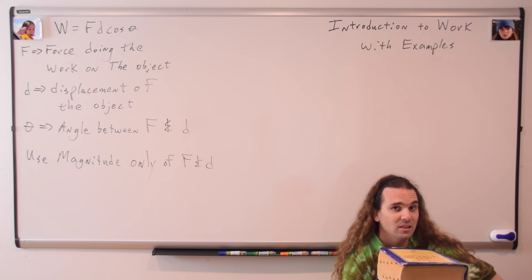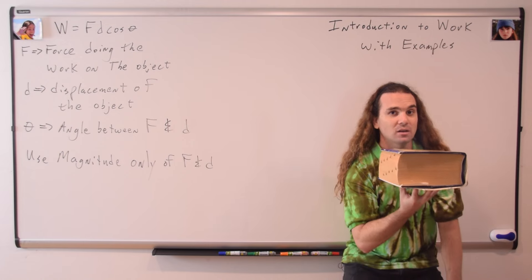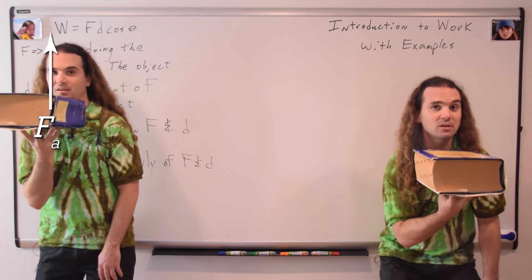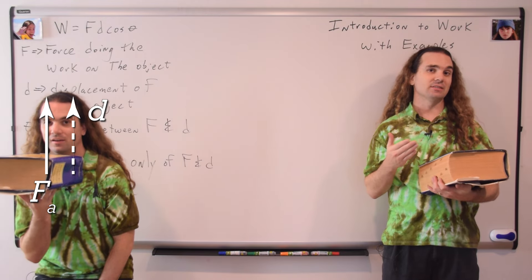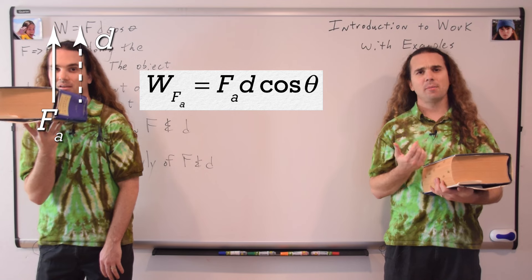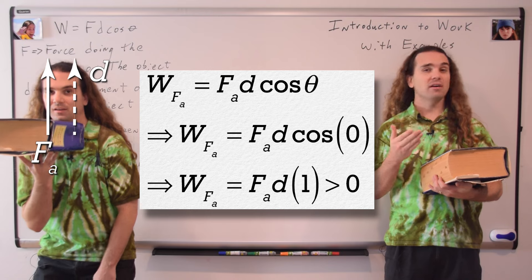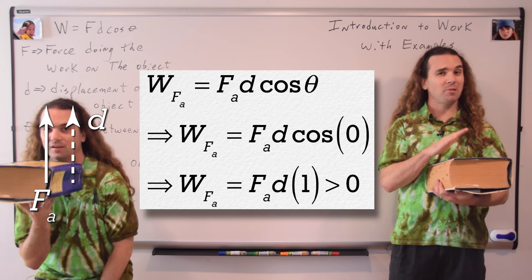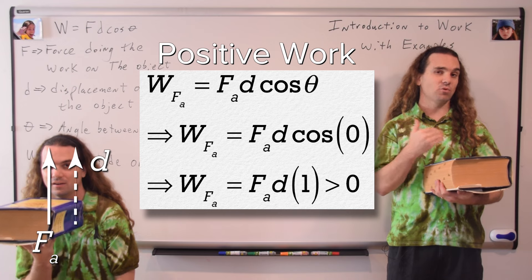As I lift the book upward, please point in the direction of the force I am applying on the book. The force I am applying on the book is upward. Please point in the direction of the displacement of the book. The force applied on the book is up, and the displacement of the book is up. What is the angle between up and up? Zero degrees. And what is the cosine of zero? One. Therefore, as I lift the book upward, because the cosine of the angle between the force applied and the displacement of the book is positive, I do positive work on the book.